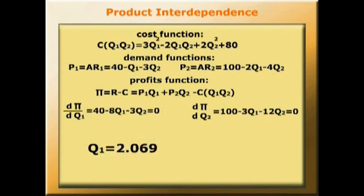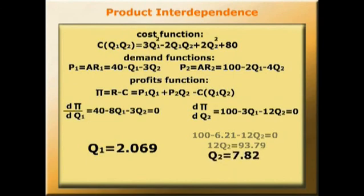But what about the optimum amount of Q2 to maximize profits? Well, we can simply substitute the value we've already worked out for Q1 into one of the equations to get Q2. So for example, 100 - 6.21 - 12Q2 = 0. 12Q2 = 93.79. So Q2 = 7.82.